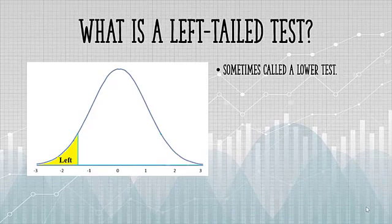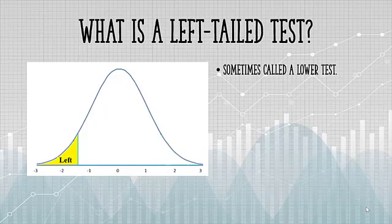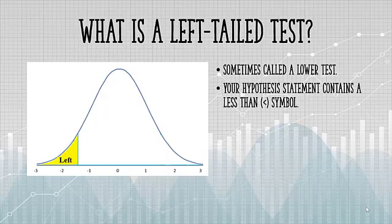Next, we have the left-tailed test. This is sometimes called a lower test. Notice how the numbers get lower as you move towards the left tail. The alternate hypothesis will contain a less than symbol.